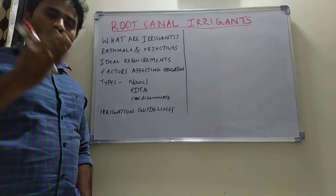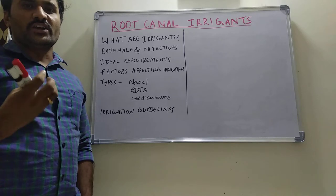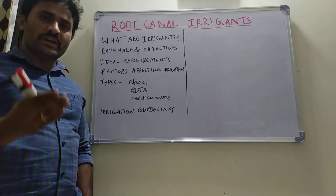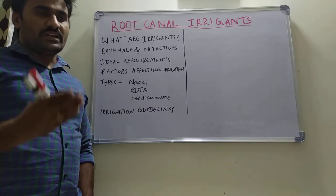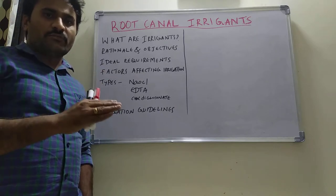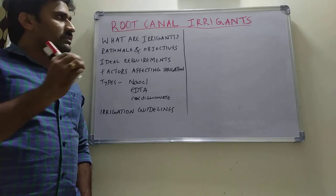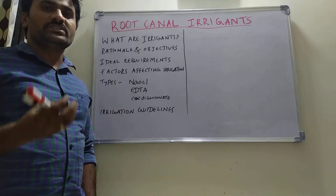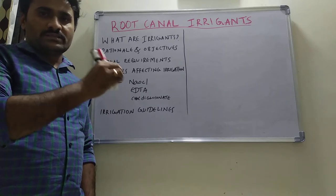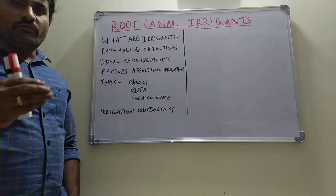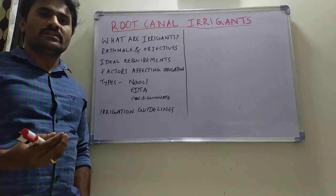The reason behind the importance of using root canal irrigants is that the pulp, being warm, moist, and nutritious, provides an environment rich in nutrients for microbial growth. Microorganisms in the root canal also avoid the host's defense mechanism due to the lack of microcirculation in the dead pulp — there is no blood circulation, so host defense cannot fight microorganisms in the dead pulpal space.